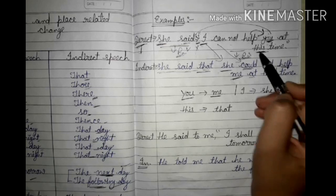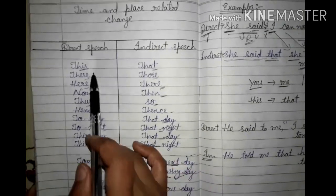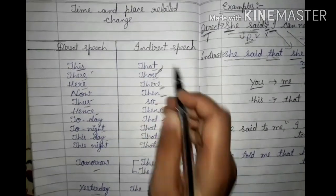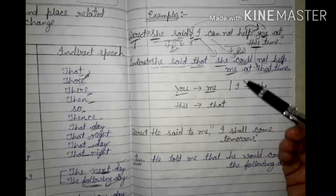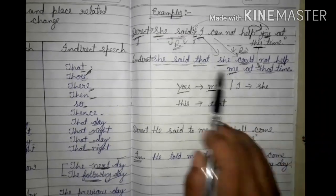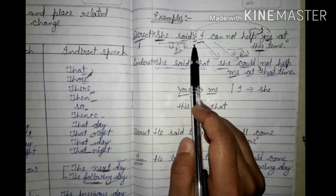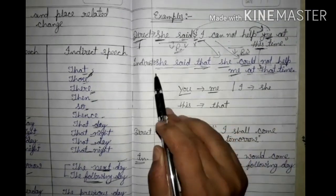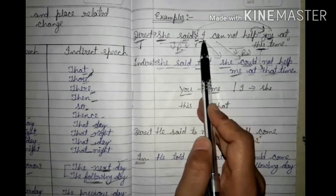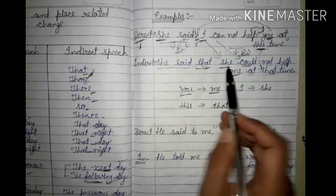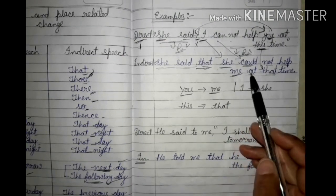Now the time and place related change: 'this time' has to change to 'that time'. So the converted sentence is: 'She said that she could not help me at that time.' In this sentence we have covered all tense related changes, pronoun related changes, and time related changes. 'I' changed to 'she' because it matches the subject of the reporting verb. 'Can' changed to 'could' for past tense.